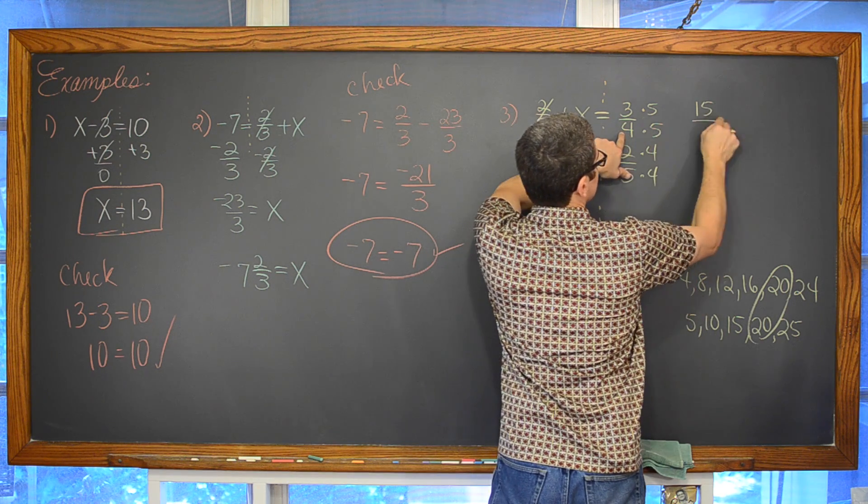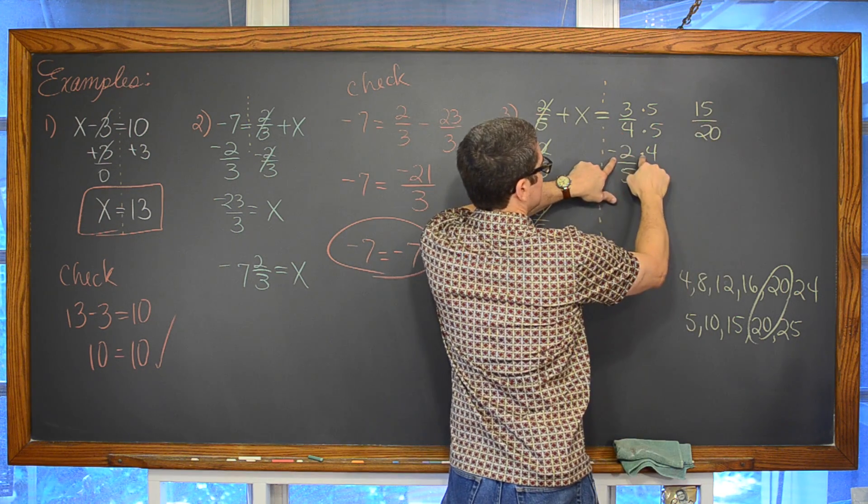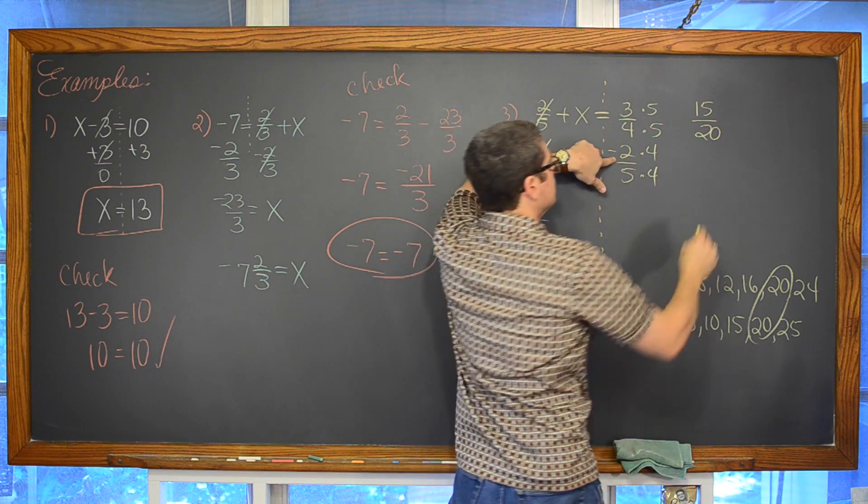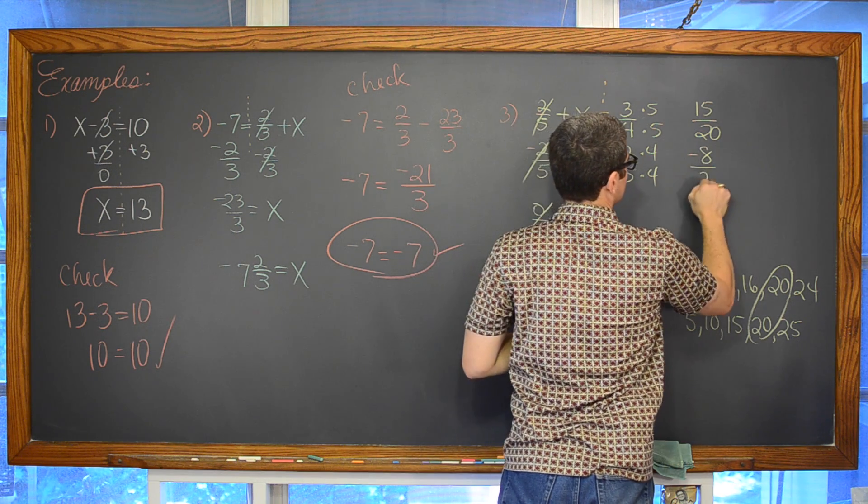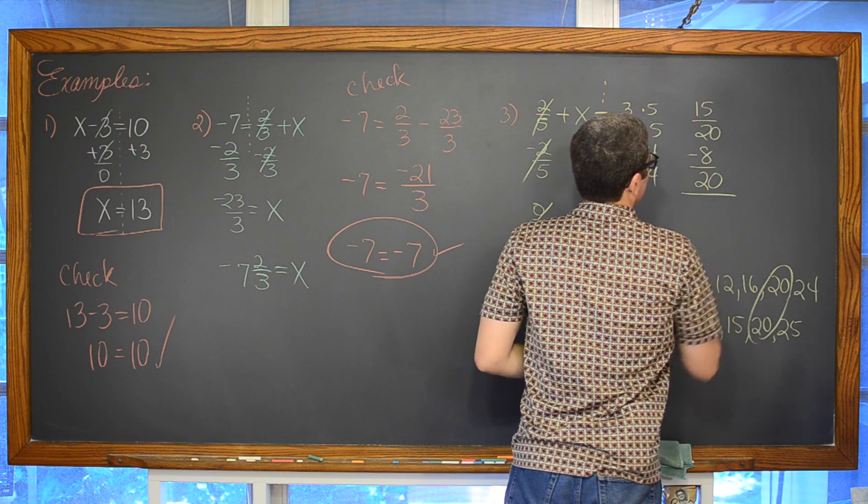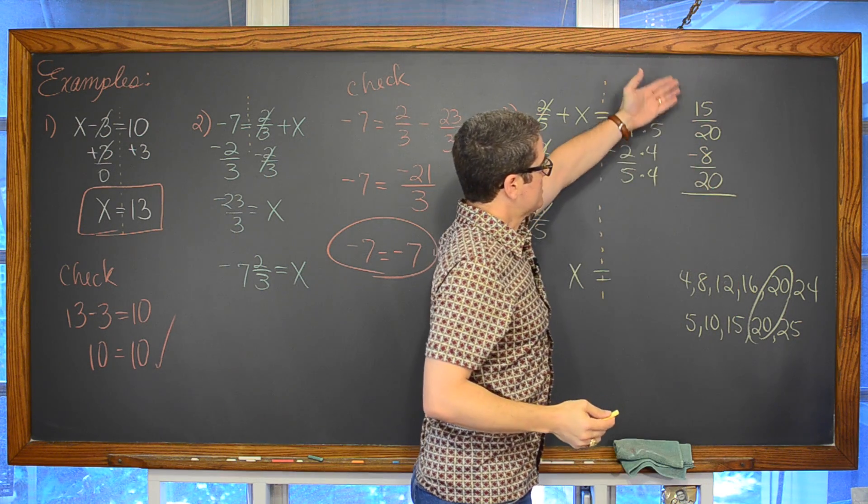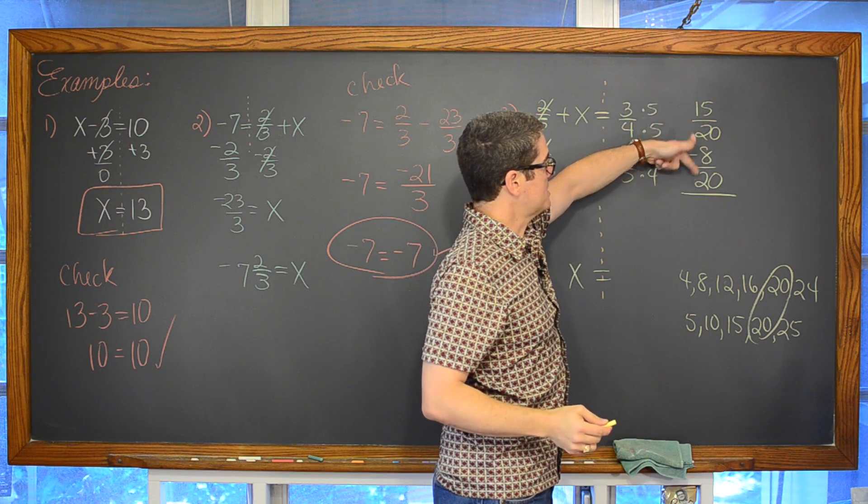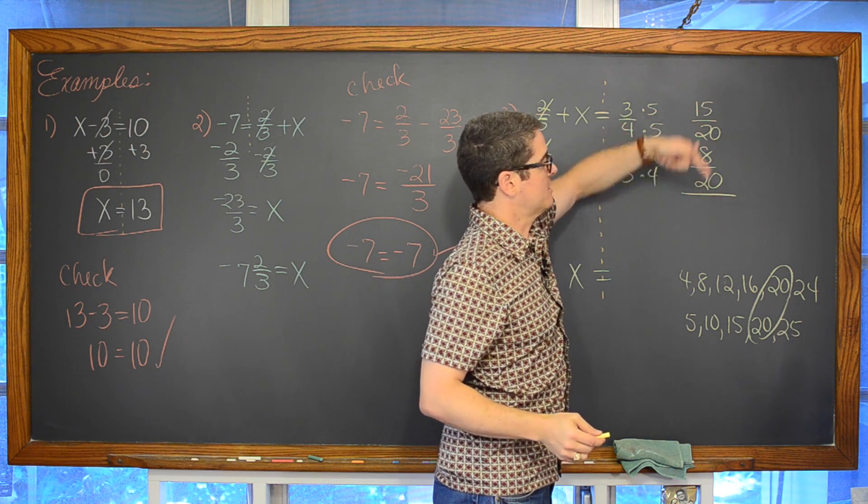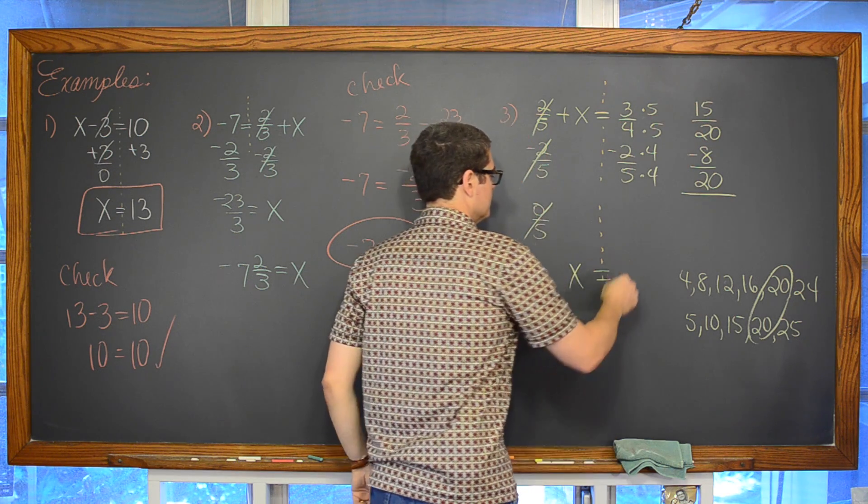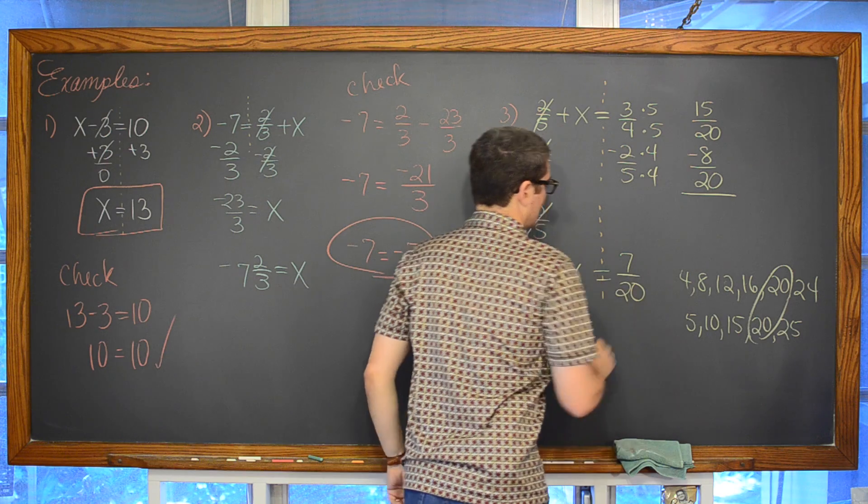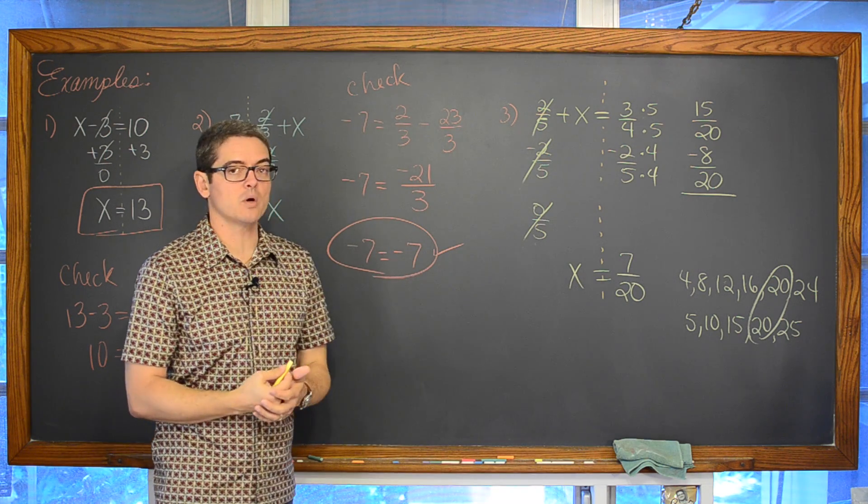And that is going to give me 3 times 5 is 15, 4 times 5 is 20. Negative 2 times 4 is negative 8. And 5 times 4 is equal to 20. Now bringing these together, subtracting now just the numerators, now that we have the common denominator, 15 minus 8 is equal to 7. And our final answer is x is equal to 7 over 20.